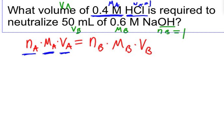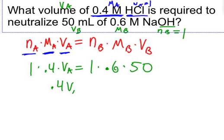This is just algebraic substitution. Plugging in the numbers: 1 times 0.4 times Va equals 1 times 0.6 times 50. That simplifies to 0.4 Va equals 30. Dividing both sides by 0.4 gives Va equals 75 milliliters.